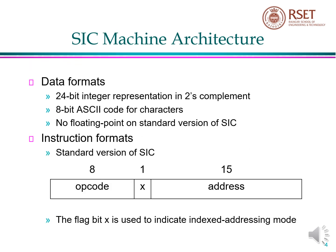Data format. The SIC machine mainly deals with two types of data: first one is integer data, and second is character data. The integers will be of length 24 bits and will be in 2's complement format. Characters are represented in ASCII code, which is of 8-bit length. And in an SIC machine, you cannot store floating point numbers.